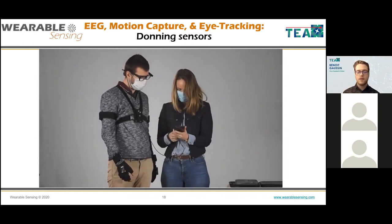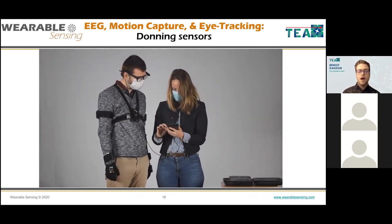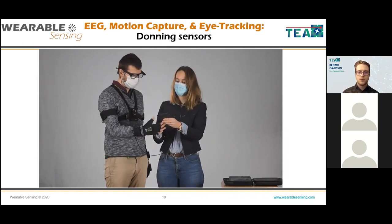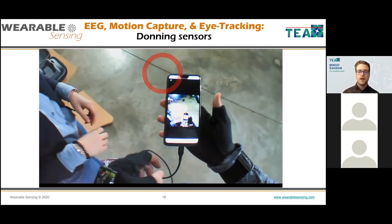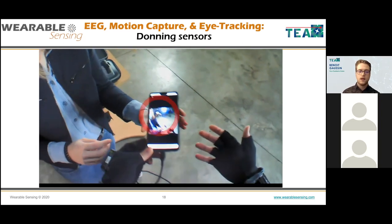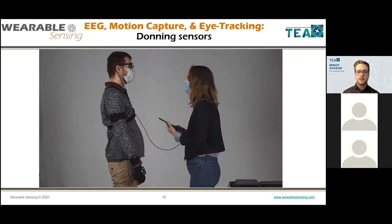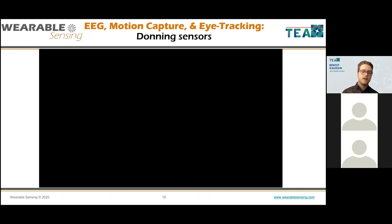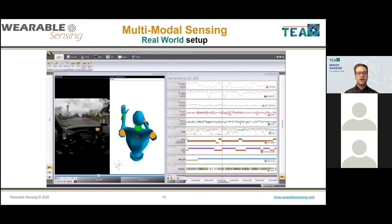Once plugged into a smartphone acting as a data recorder while the person is driving, the eye tracker shows exactly what the person is looking at — indicated by a red circle. For the donning, total setup time was between 15 and 30 minutes. For the case study itself, we asked the driver to go from point A to point B in a familiar environment — he knew the area but it wasn't his usual commute, so he couldn't engage autopilot mode.